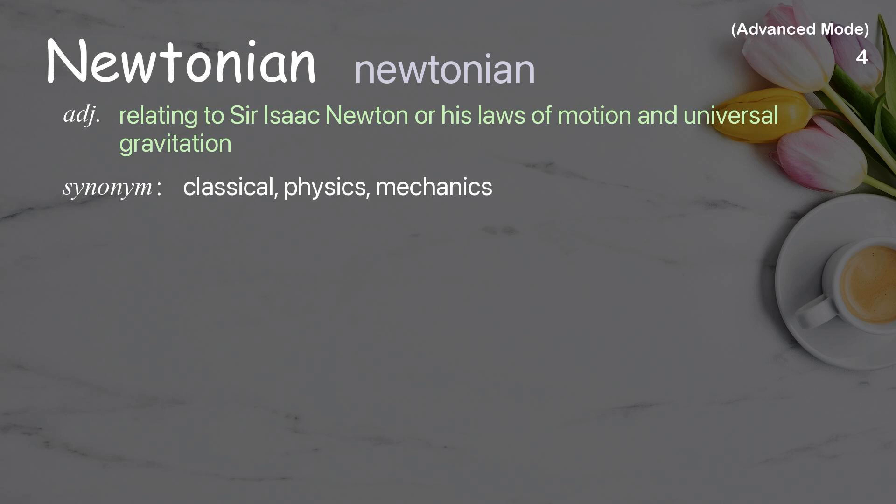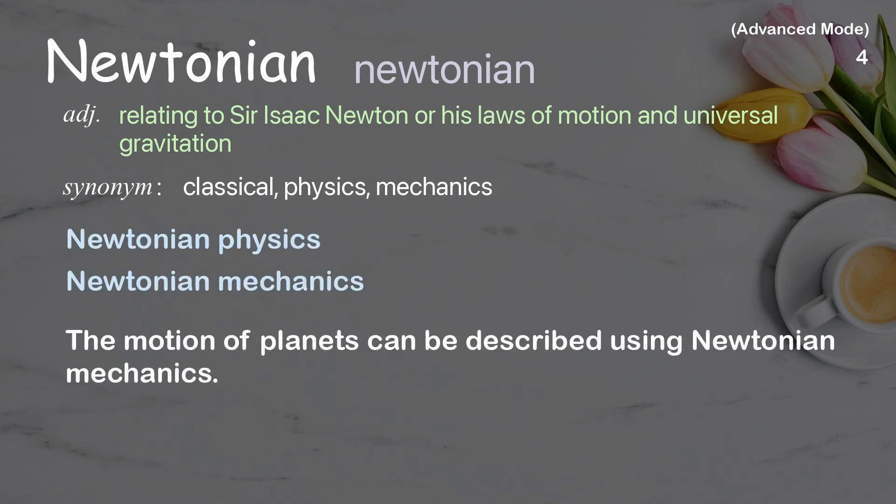Newtonian: Relating to Sir Isaac Newton or his laws of motion and universal gravitation. Examples: Newtonian Physics, Newtonian Mechanics. The motion of planets can be described using Newtonian mechanics.